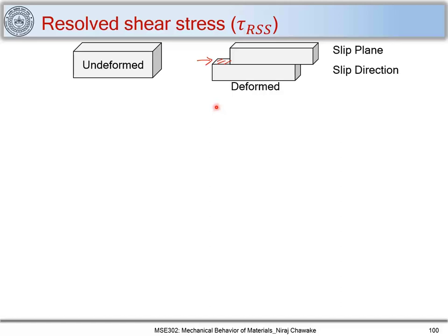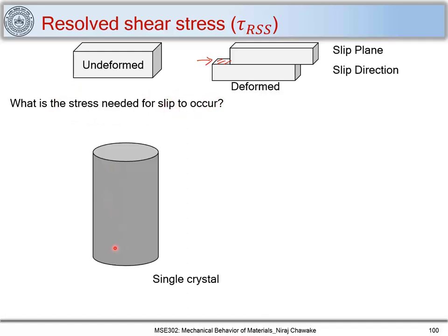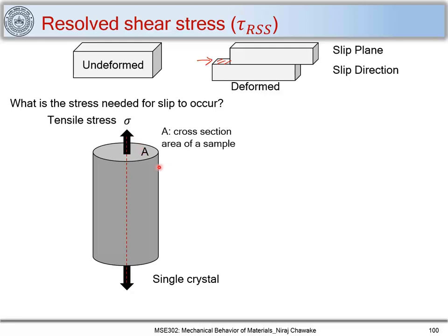Now we will look at what amount of stress is required to cause slip. Let's investigate this problem of finding out what stress is needed to have slip occur in a crystallographic material. Let's consider a single crystal being subjected to a tensile stress sigma applied along its tensile axis, and let the cross-sectional area of this sample be A.